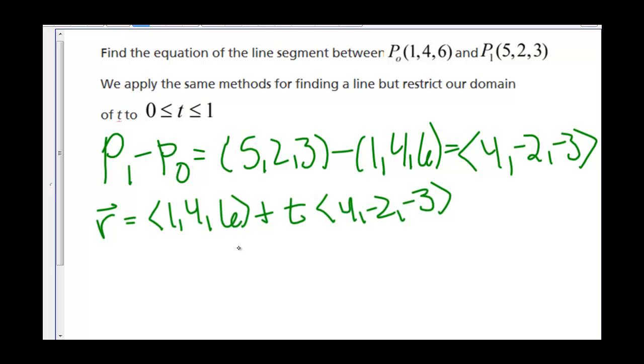I picked (1,4,6) because I want t to go from 0 to 1. If P0 is going to be my beginning point, then when t equals 0...